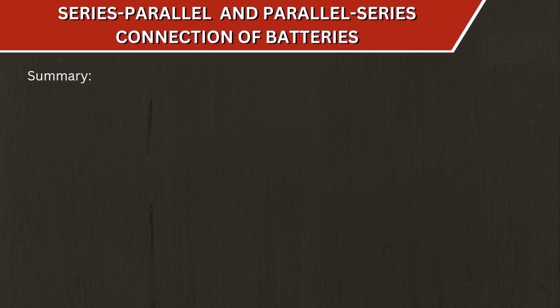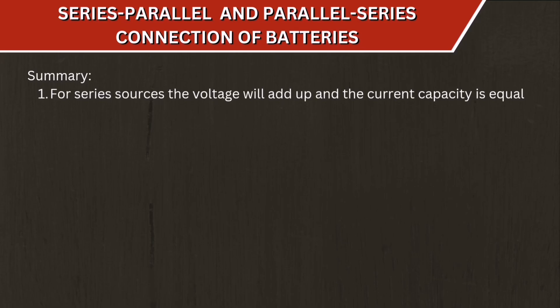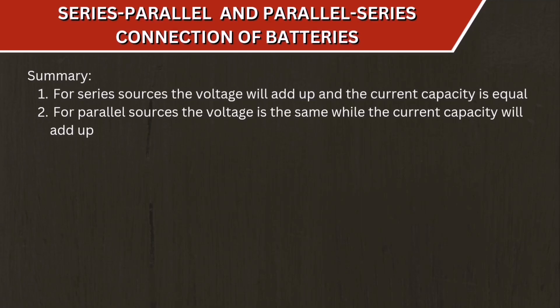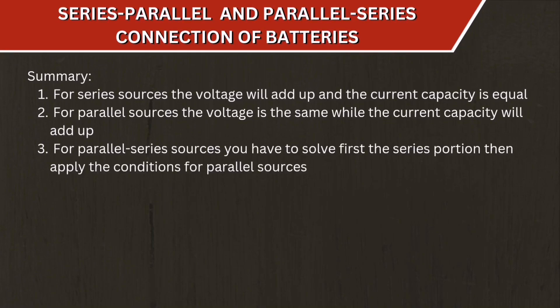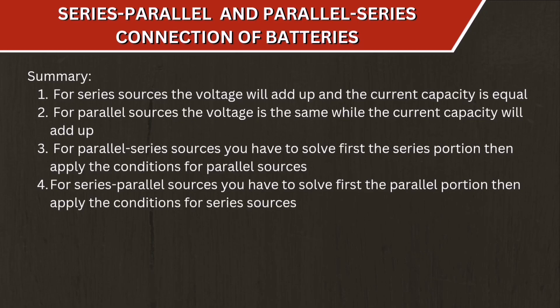As a summary: for series sources, voltage adds up and current stays the same as the individual unit; for parallel sources, voltage stays the same and current adds up. For combination circuits, apply the series and parallel conditions accordingly. For parallel-series, solve the series portion first, then apply the parallel group conditions. For series-parallel, solve the parallel portion first, then apply the series group conditions.